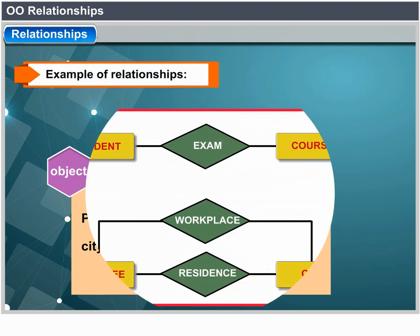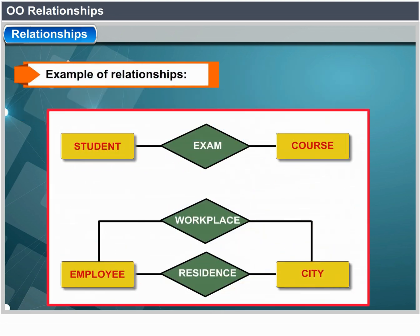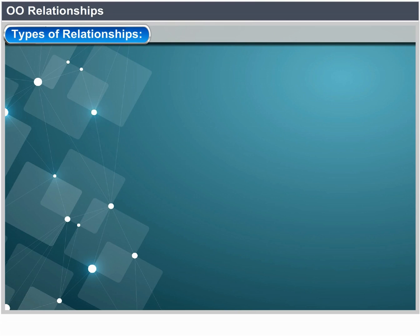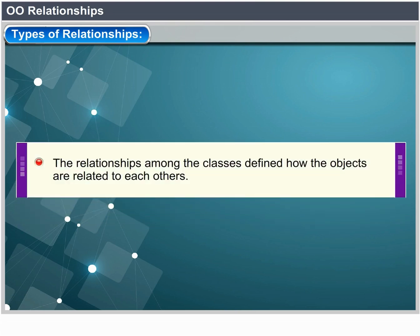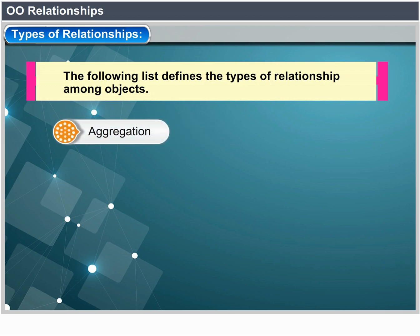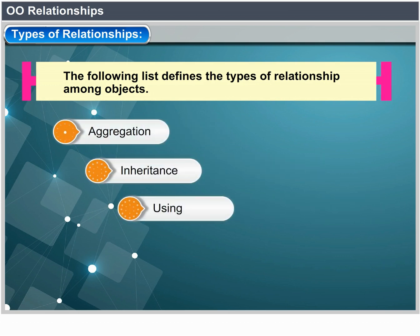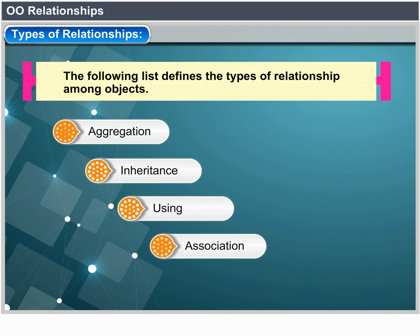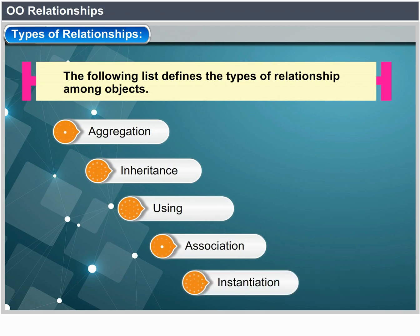Types of relationships: relationships between classes are defined to show how objects relate to each other. The following sorts of relationships exist: aggregation, co-inheritance, using, association, and instantiation.